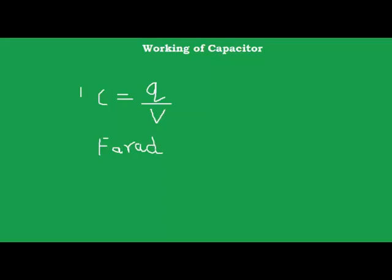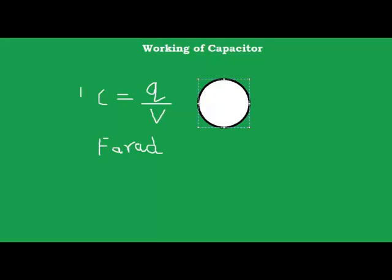The basic principle behind the working of a capacitor is electrostatic induction. Let me explain what is meant by electrostatic induction. This is a neutral sphere — neutral means that it has an equal number of positive and negative charges. This metallic sphere has equal numbers of positive and negative charges, so it is neutral.